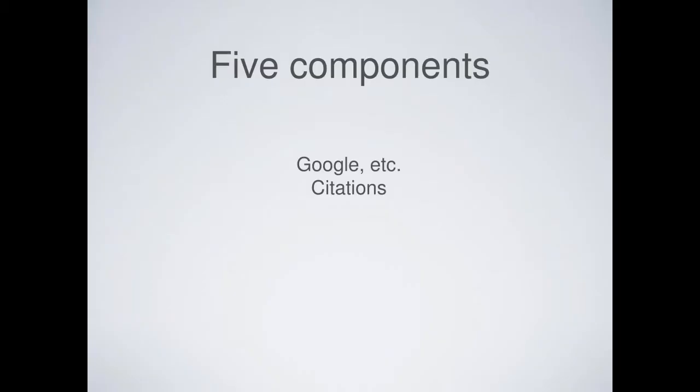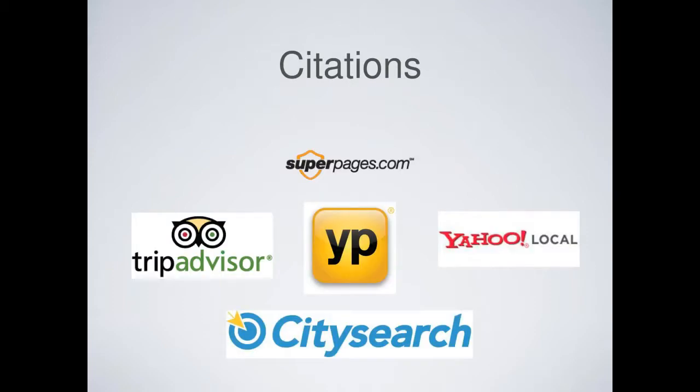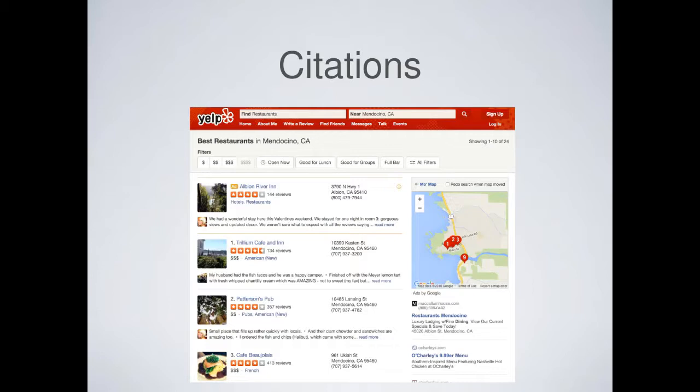The next component is citations. These are places like Yelp, yellowpages.com, and similar sites that list your business name, address, and phone number — kind of like directory sites. For regular SEO, directory listings don't work very well anymore. But for local SEO, they're critically important still.